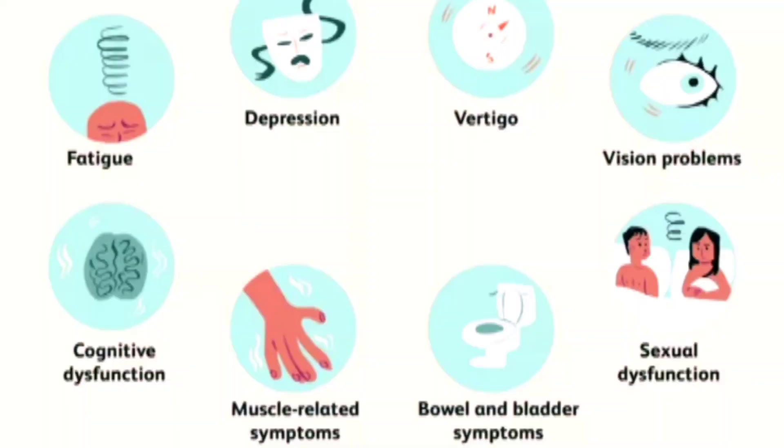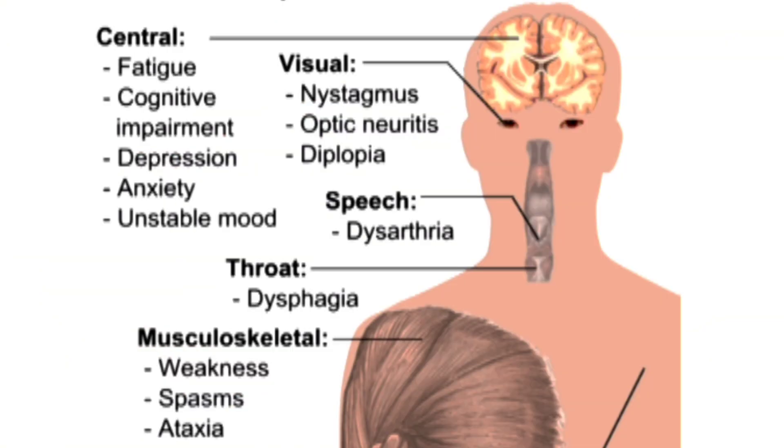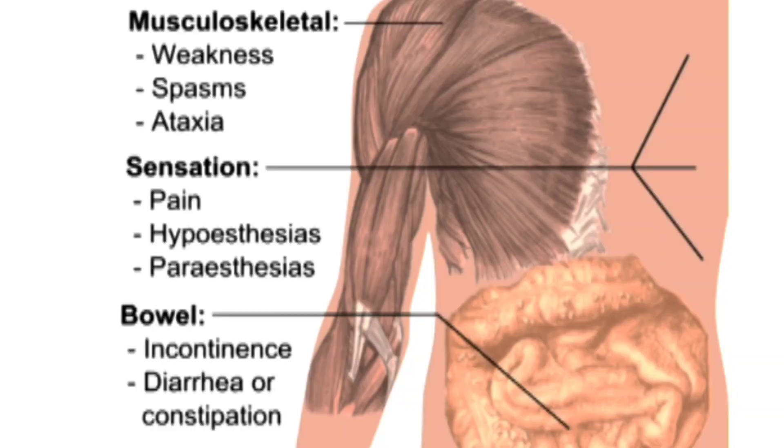What are the signs and symptoms of multiple sclerosis? It can affect the motor, cognitive, sensory, and visual functions. Motor disturbances include tremors, spasticity, and weakness of the muscles. Sensory disturbances include paresthesia, tingling sensation, numbness, and hypoesthesia.